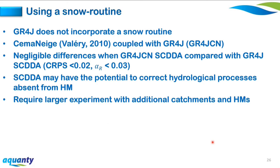GR4J does not incorporate a snow routine, despite two of the three catchments having snow as an important hydrological process. A simplified snow routine was coupled with GR4J to check for performance differences between SCDDAs. Negligible differences were found — CRPS difference of 0.02 and alpha index difference of 0.03 — suggesting the SCDDA may have the potential to correct for hydrological processes absent from the model, but larger experiments with additional catchments are needed to confirm.